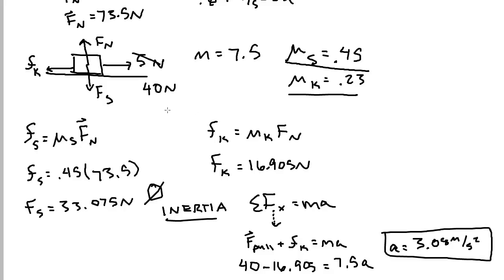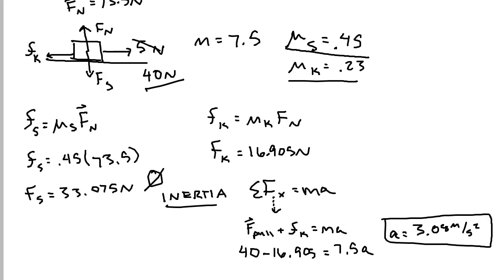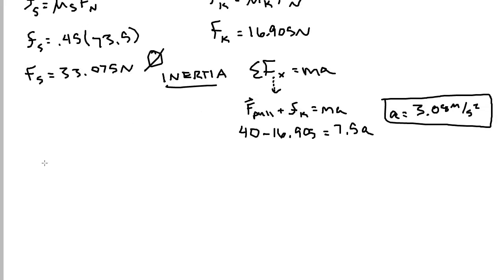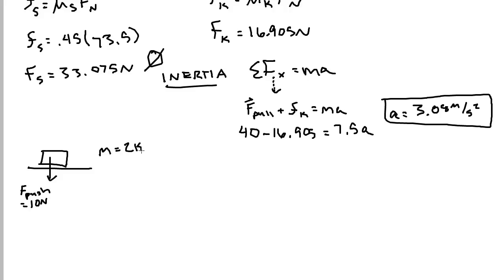If asked for the object's acceleration using that pull force and those coefficients of kinetic and static friction, 3.08 meters per second squared is your answer. Now let's do one more example dealing with forces. Let's say I've got a box and I'm going to push down on it with a force push of 10 Newtons, and this block has a mass of 2 kilos — find the normal force on the object.